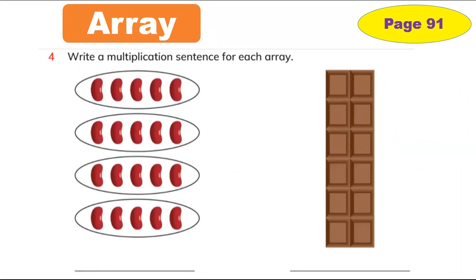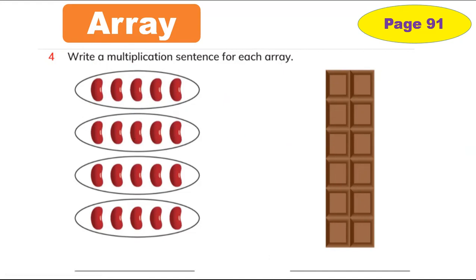We're going to learn multiply by array. We use an array to multiply numbers. Last time you added different numbers like 2 plus 2 plus 2 equals 6, right? But today we're going to use arrays, like from the beans and from the chocolate. Write a multiplication sentence: 2 multiply 5 equal 10, for each array.